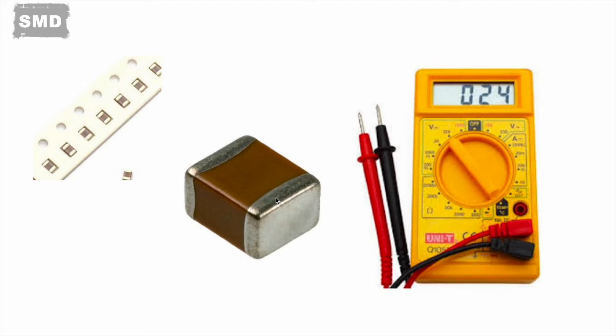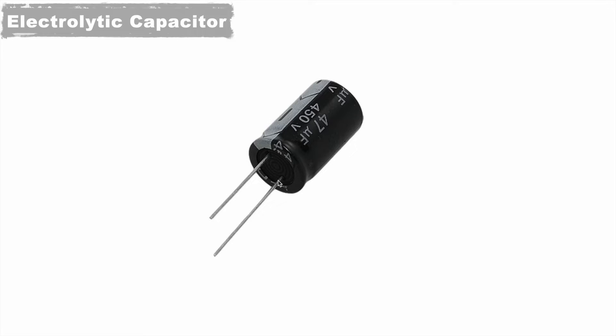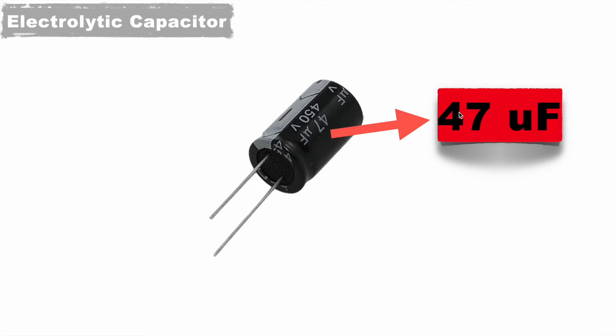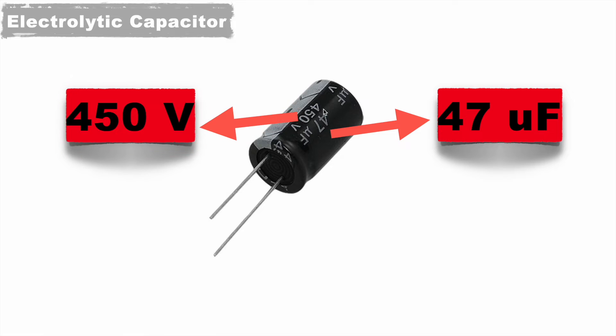Now let's see some of the through-hole capacitors. This is an electrolytic capacitor and its value we can directly see on top of it. Here it is written 47uF. So its capacitance is 47uF. And this capacitor can work till 450V of power supply.